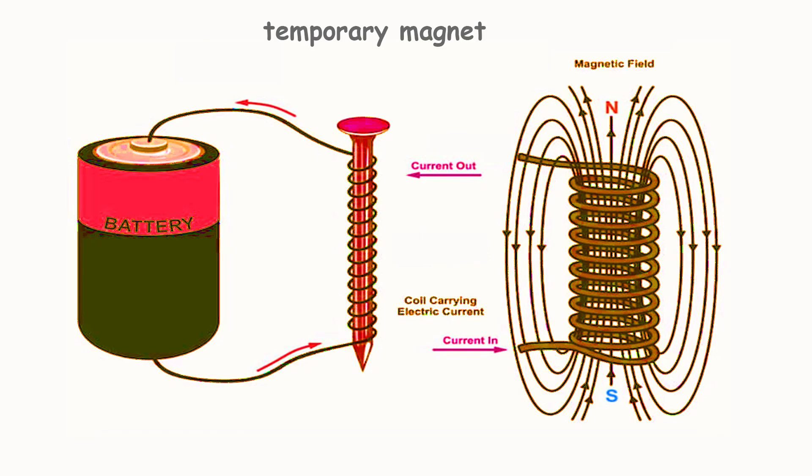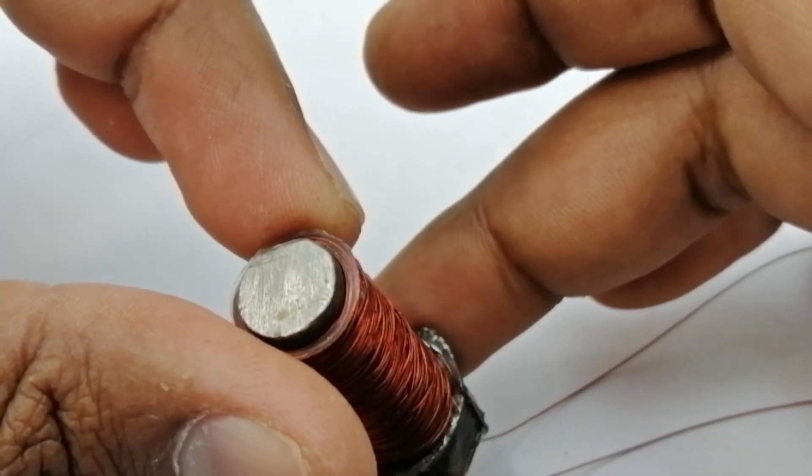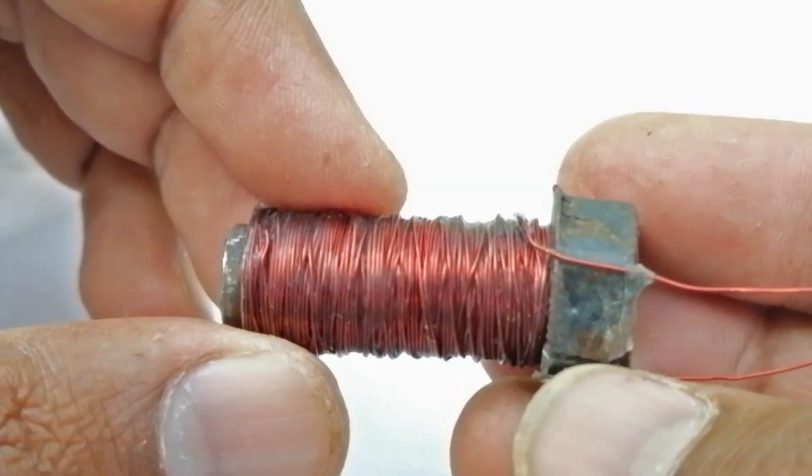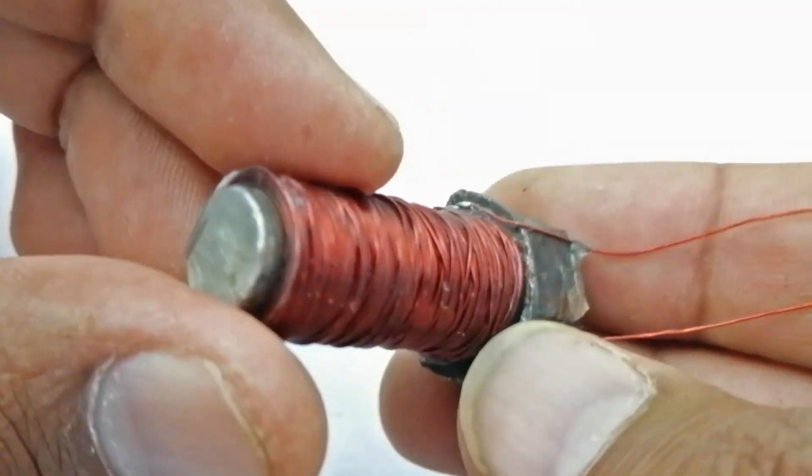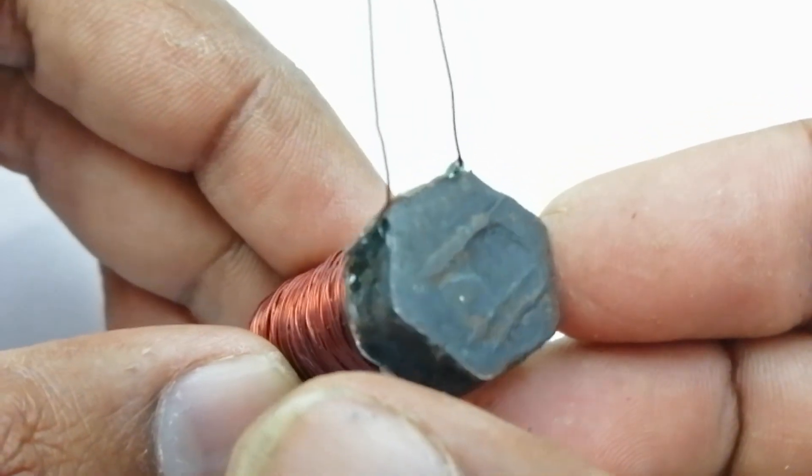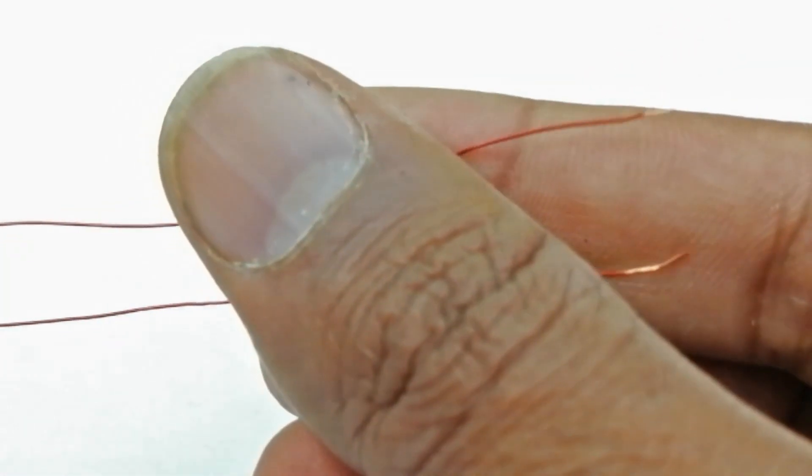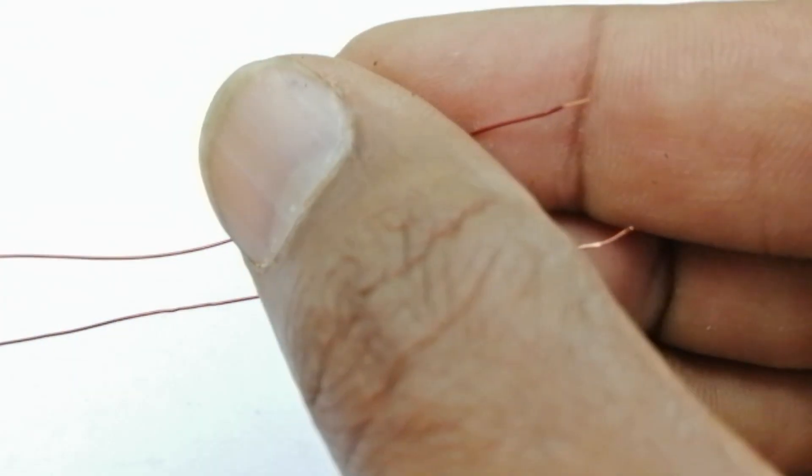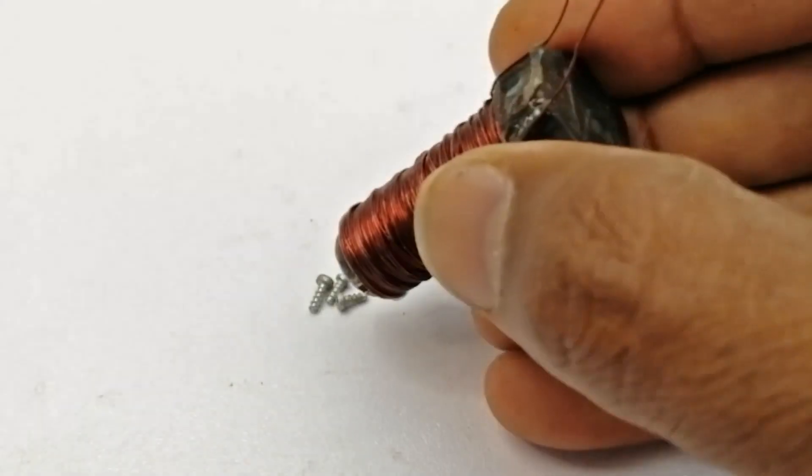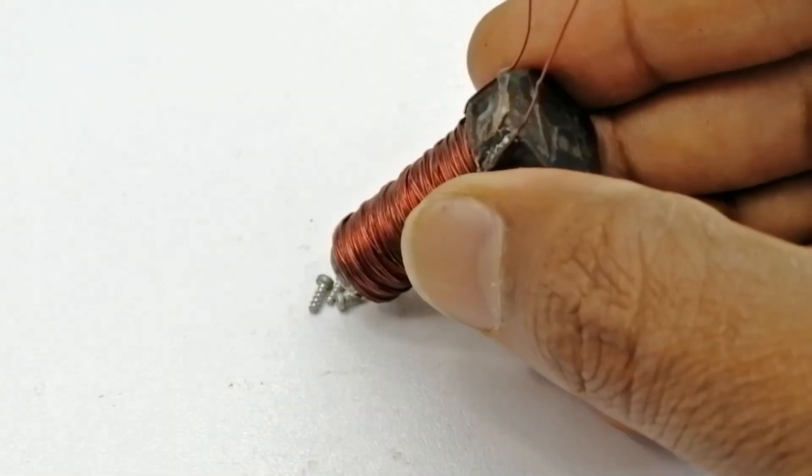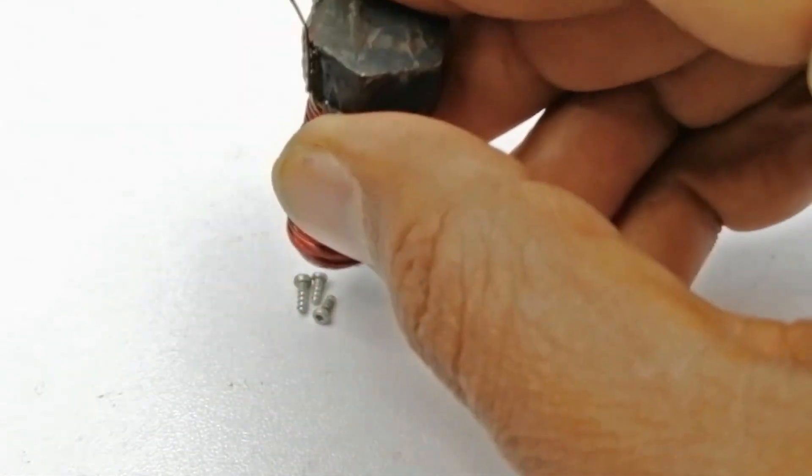Friends, you know that when a wire is wrapped around an iron rod and current is passed through it, the system becomes a temporary magnet. It will remain a magnet as long as the electric current continues to flow. As soon as the electric current is switched off, its magnetic properties disappear. We have a few pieces of iron. If we take this coil to it, it will not catch these pieces.